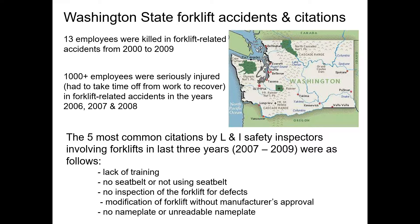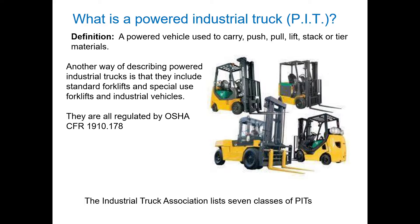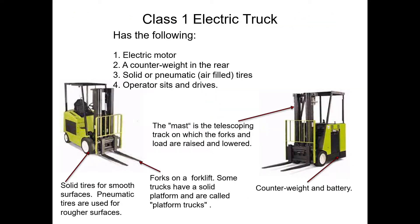The five most common citations around forklifts are: lack of training, no seat belt or not using it, no pre-shift inspection for defects, modifying the forklift without manufacturer approval, and no nameplate or an unreadable nameplate. A powered industrial truck is any powered vehicle used to carry, push, pull, lift, stack, or tier materials — governed by OSHA under 1910.178. There are seven different classes of powered industrial trucks.